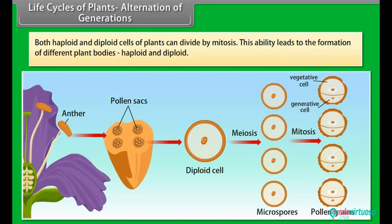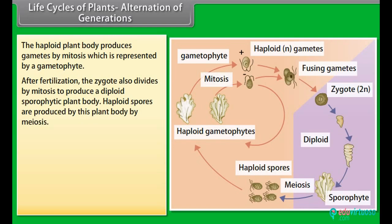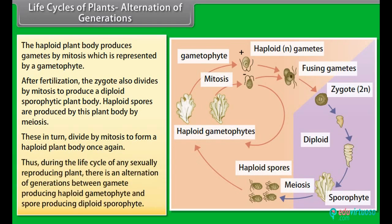Both haploid and diploid cells of plants can divide by mitosis. This ability leads to the formation of different plant bodies — haploid and diploid. The haploid plant body produces gametes by mitosis, represented by the gametophyte. After fertilization, the zygote also divides by mitosis to produce a diploid sporophytic plant body. Haploid spores are produced by this plant body by meiosis, and these in turn divide by mitosis to form a haploid plant body once again. Thus, during the life cycle of any sexually reproducing plant, there is an alternation of generations between the gamete-producing haploid gametophyte and the spore-producing diploid sporophyte.